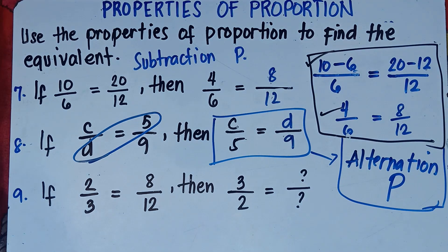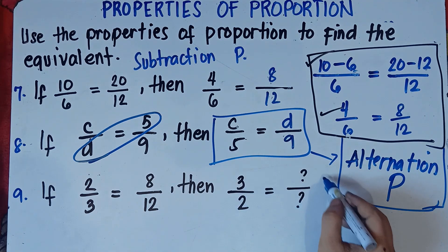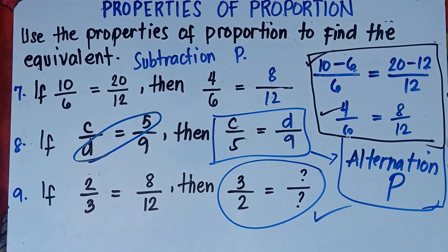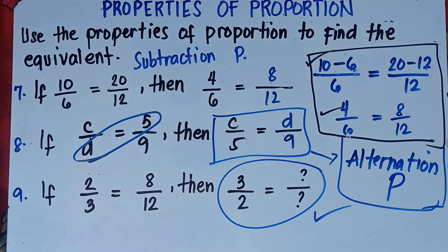Number 9: if 2 over 3 equals 8 over 12, then 3 over 2 equals blank over blank. Try this one, class, and put your answer in the comment section below. Once again, this is Teacher MJ. I hope you learned something new today. If you like this video, do not forget to like, share, and subscribe. Share it to your friends and classmates so we can help more students. Goodbye for now, and don't forget to answer number 9!